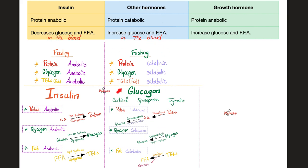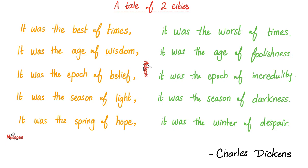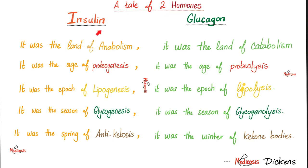Glucagon and the rest of the doofuses belong to the other land — the exact opposite. Remember Charles Dickens' A Tale of Two Cities? 'It was the best of times, it was the worst of times. It was the age of wisdom, it was the age of foolishness.' You can do the same about A Tale of Two Hormones — insulin versus glucagon: it was the land of anabolism; it was the land of catabolism. It was the age of proteogenesis; it was the age of proteolysis. The epoch of lipogenesis; the epoch of lipolysis. The season of glycogenesis; the season of glycogenolysis. The spring of anti-ketosis; the winter of ketone bodies.